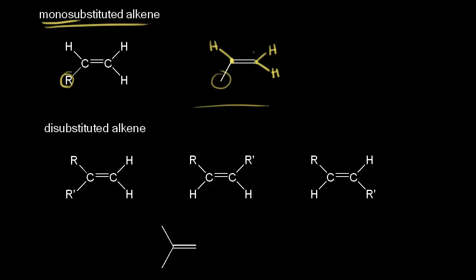If I want to name this alkene, we would make this carbon one, this is carbon two, and this is carbon three — the longest carbon chain including our alkene. A three-carbon alkene is called propene. So this is propene.